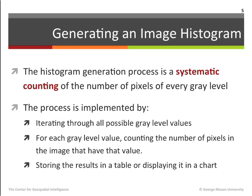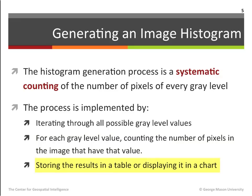How is an image histogram generated? Essentially, this is an iterative process that involves finding and counting all the pixels that have the first possible gray level in the image, and then repeating this process for all remaining gray level values. The process is implemented by iterating through all possible gray level values, counting the number of pixels in the image that have that value, and finally storing the results in a table or displaying it in a chart.